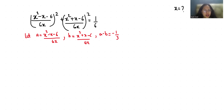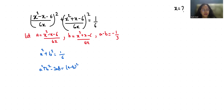So it becomes a² + b² = 1/6. Now, a² + b² - 2ab equals (a - b)². If I subtract 2ab from both sides, a² + b² - 2ab = 1/6 - 2ab.